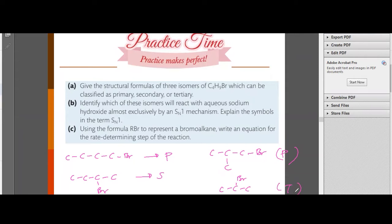Identify which of these isomers will react with aqueous sodium hydroxide almost exclusively by an SN1. SN1 is tertiary, so this. Explain the symbols in the term SN1: nucleophilic substitution unimolecular, since only the concentration of halogenoalkane affects the rate of reaction.